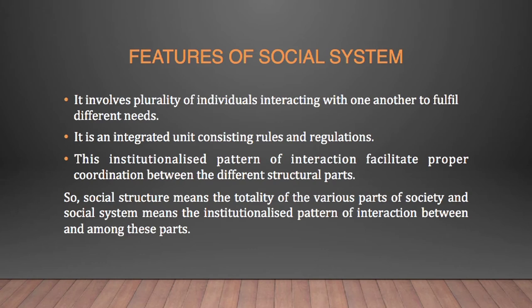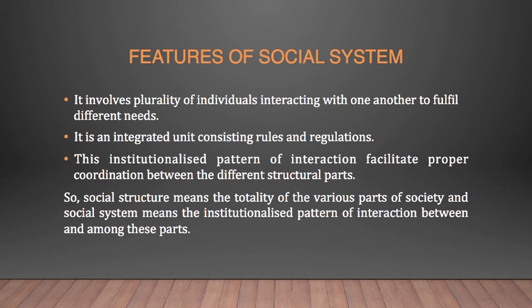In a society, there are different parts like the economy, the polity, the family, and the religion. Each part consists of different institutionalized patterns of interaction to fulfill needs. For example, the economy contains the economic system and the polity consists of the political system. These institutionalized systems help in facilitating the goals of each part. So, social structure means the totality of the various parts of a society, and social system means the institutionalized pattern of interaction between and among those different parts.